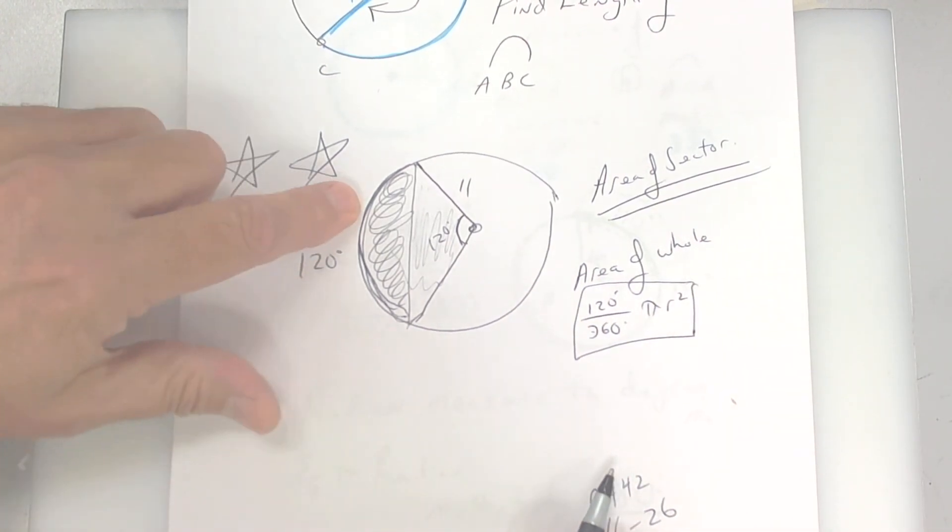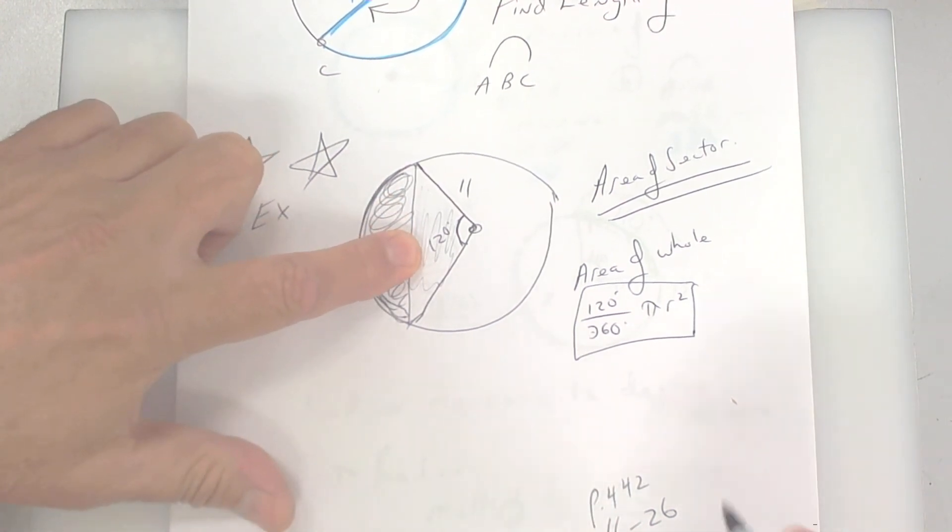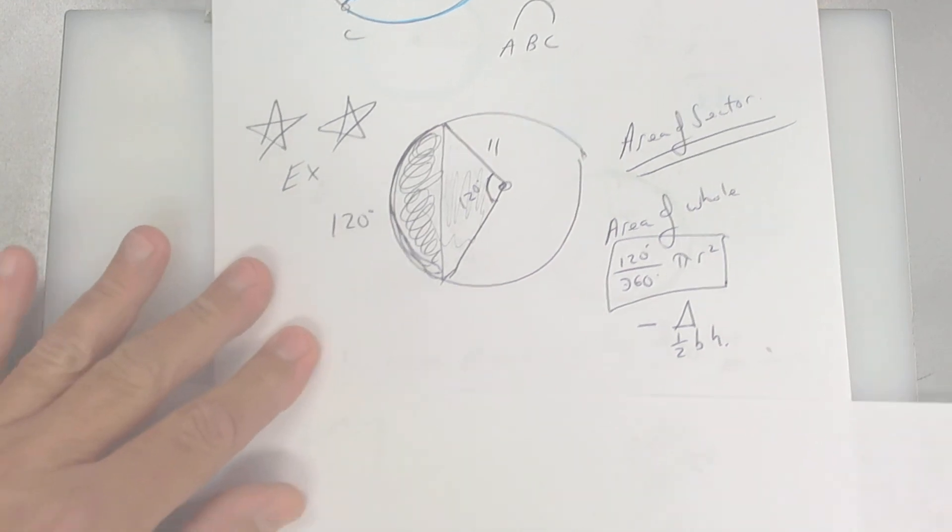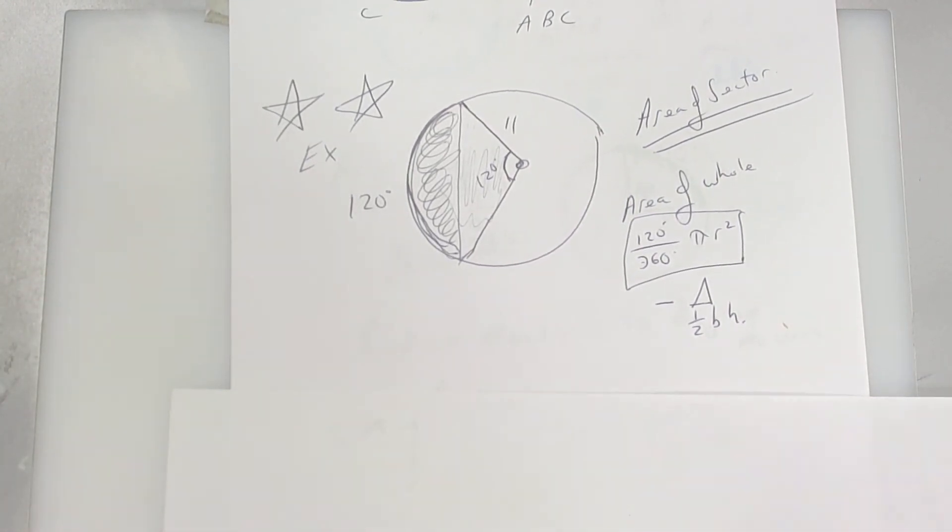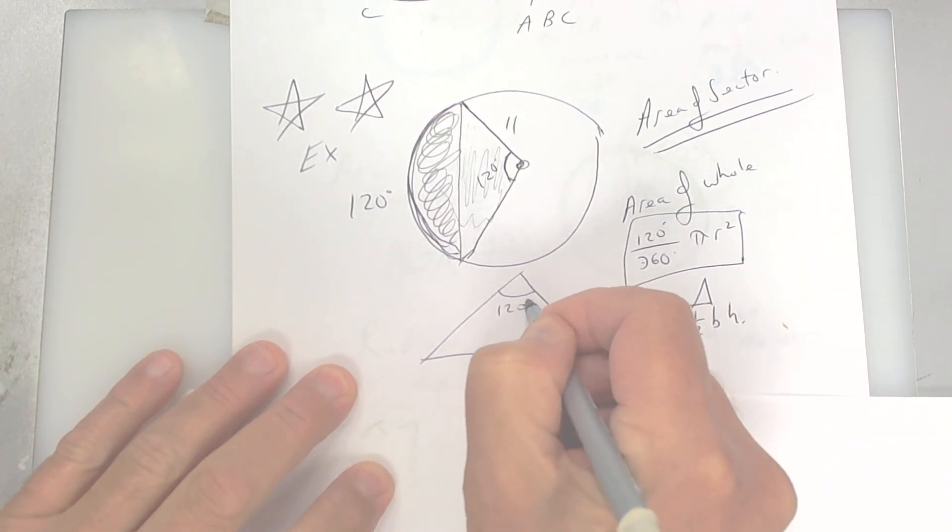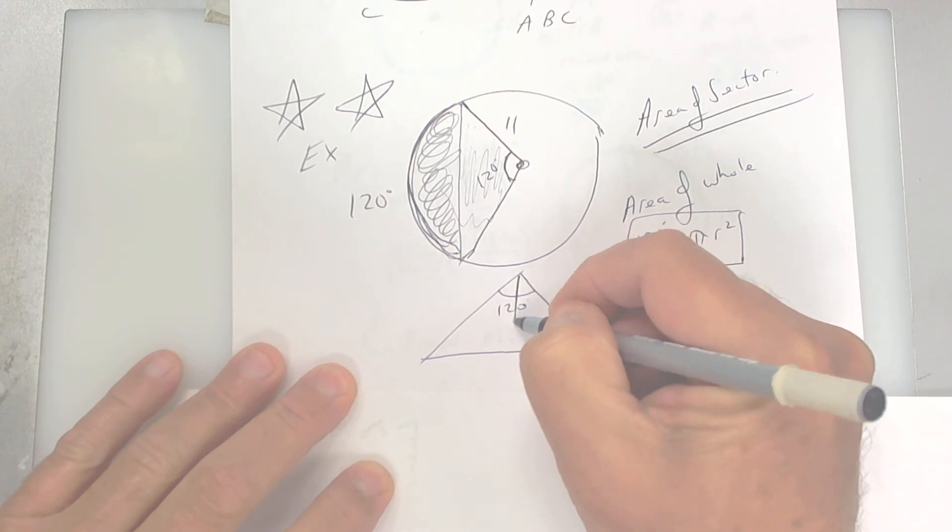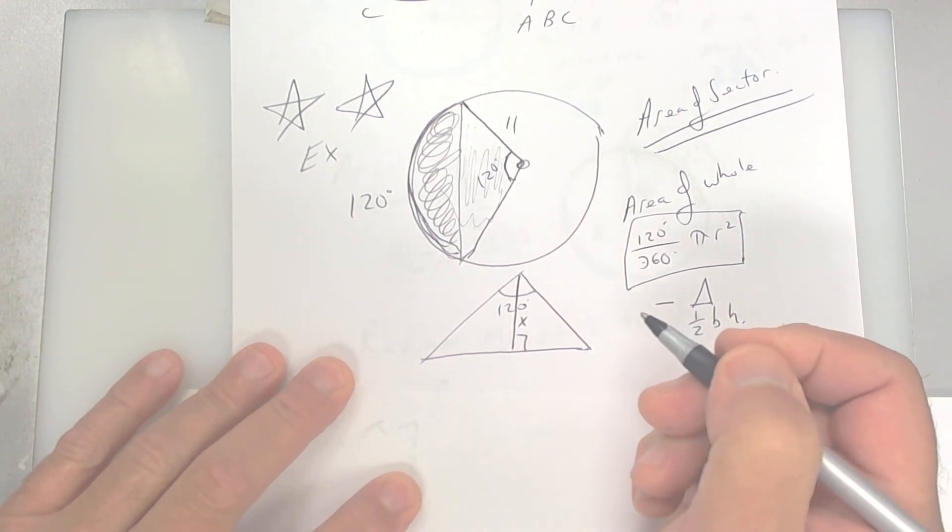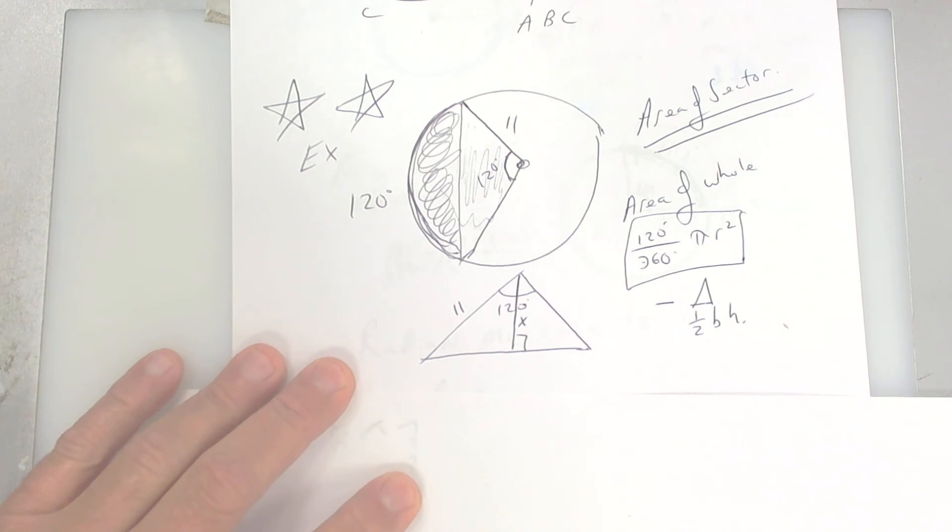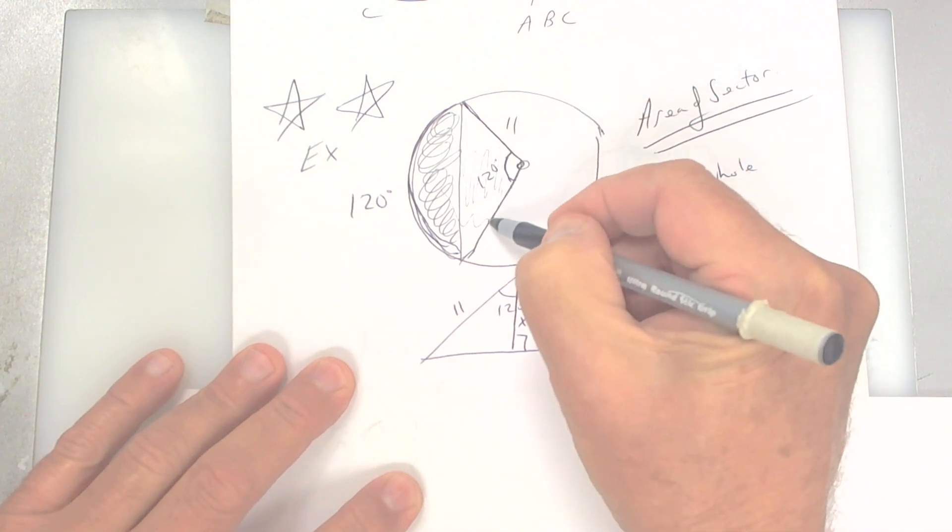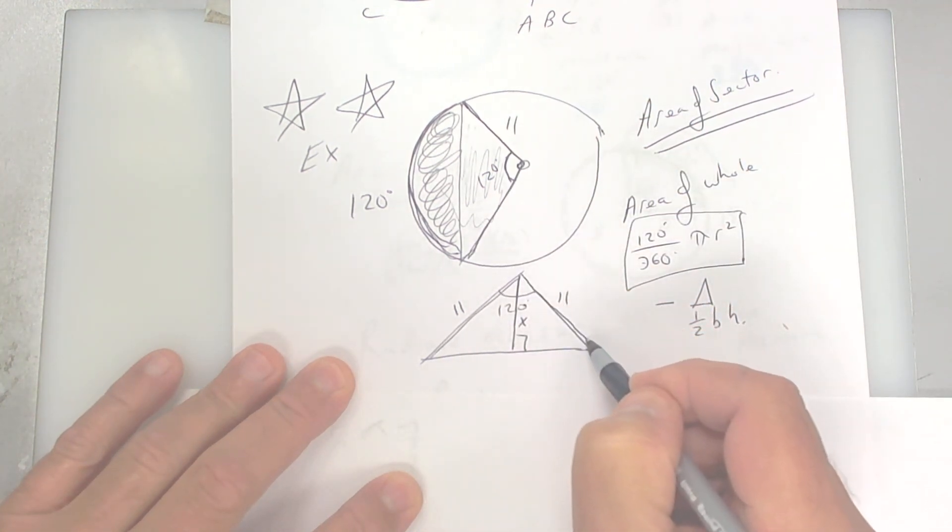Now you want to subtract this triangle out of here. So minus the triangle. And every triangle is 1 half base times height. Now this one is kind of hard. I'm not going to lie to you. So what you've got to do is take out this triangle here. And this triangle has a 120 degree angle. But if you drop an altitude here, because we need the height of that, we're going to put an x right there. We need that. We know that this is 11 right here. So that would make this one 11 as well, because it's a radius.